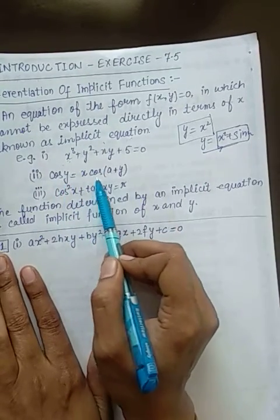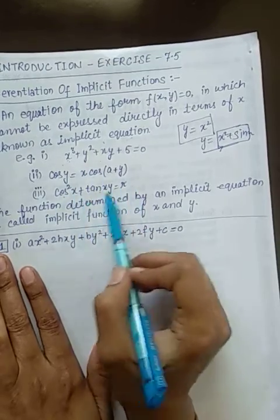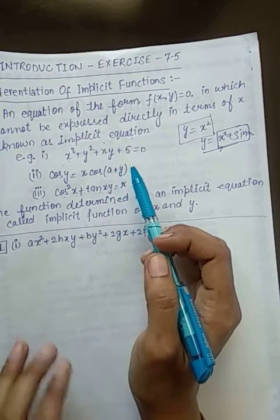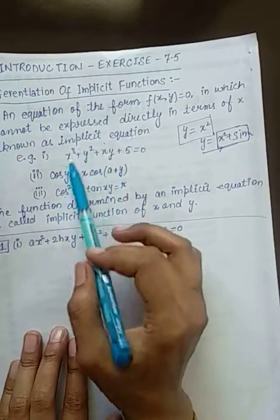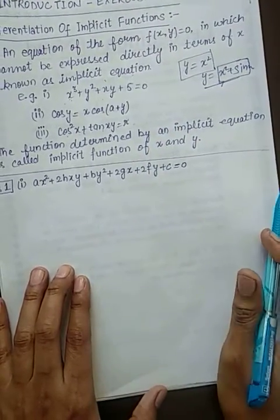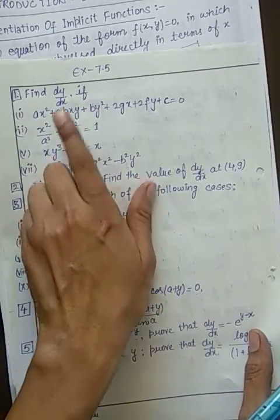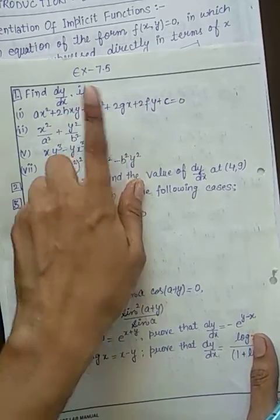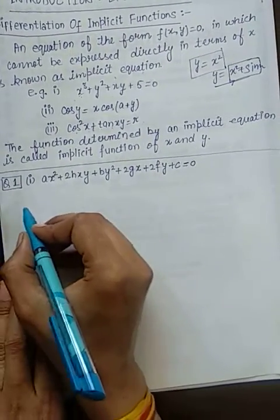For example, x³ + y³ + xy + 5 = 0. Similarly cos y = x·cos(a+y) and cos²x + tan(xy) = π. Yeh sari implicit equations hai. The functions ko jo implicit equations ko represent kar rahe hai unko hum kya bolte hai implicit functions. To is exercise me hame is type ke functions ko differentiate karna hai. First question hai find dy/dx if this equation is given to you.